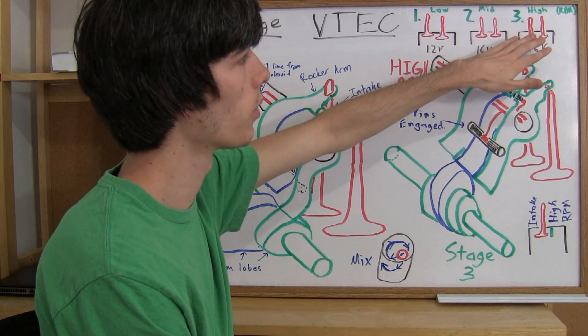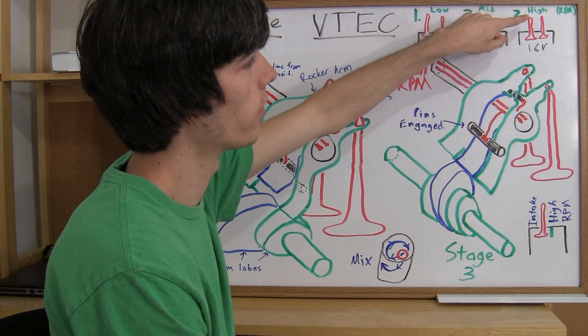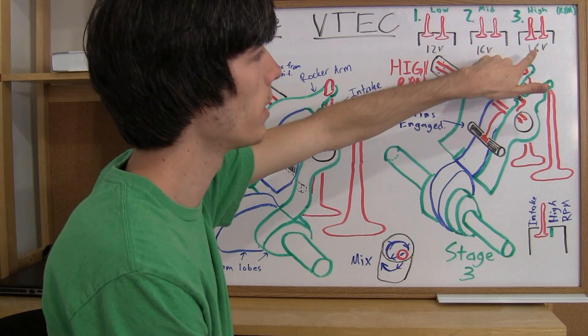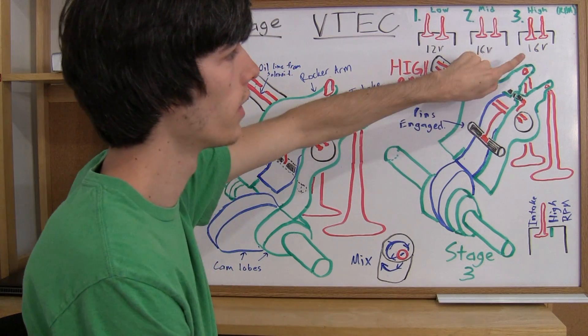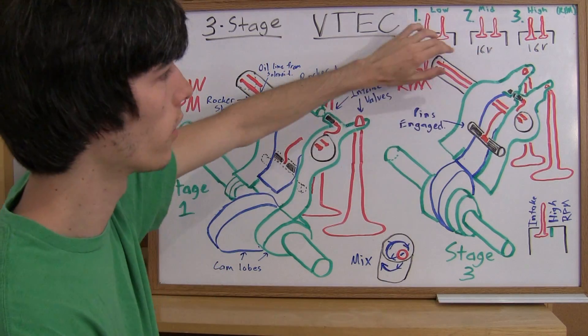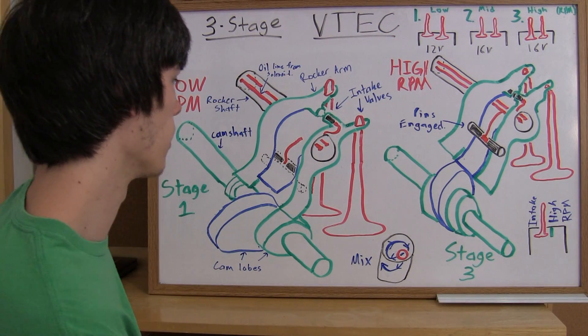So as you can see here with the high RPM, your valves are going to go down even more. And once again, for the mid-range and the high range, you're going to have 16 valves operating rather than 12 like in the low range.